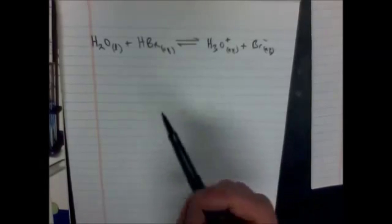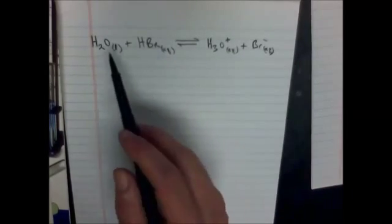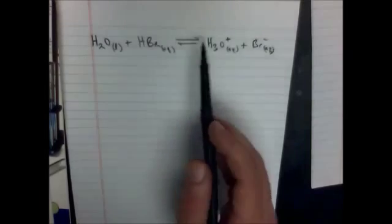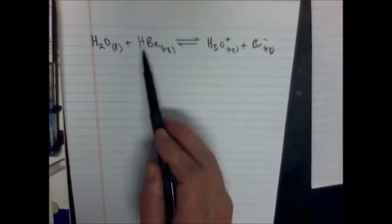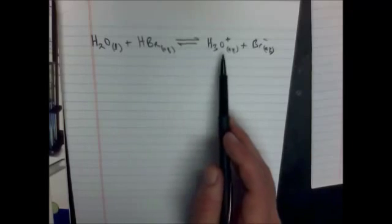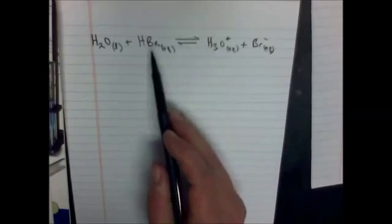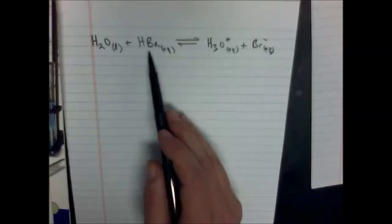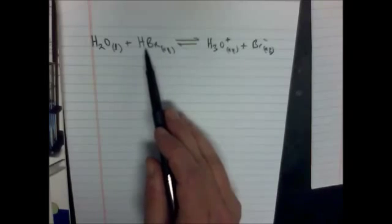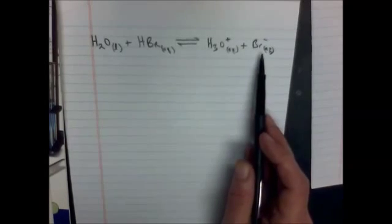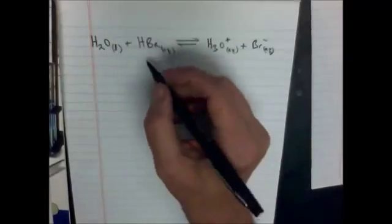So we have to decide which one. Let's just start with the acid. Which one of these will lose a proton going to the right hand side? Well, it looks like that if you look at the water, it's going to gain a proton. Well, that makes it a base. The HBr, hydrobromic acid, loses a proton to become the bromide ion. So that must mean this one's the acid.